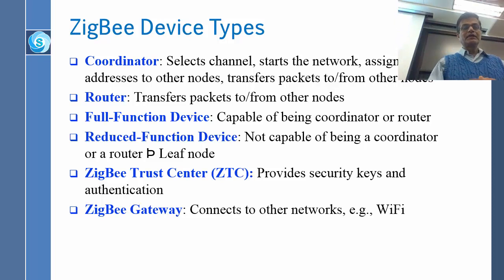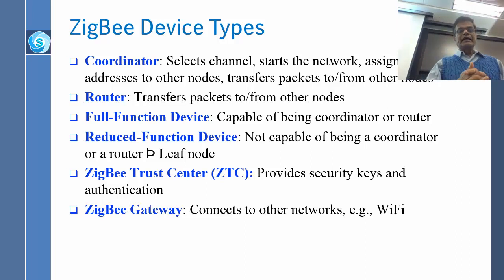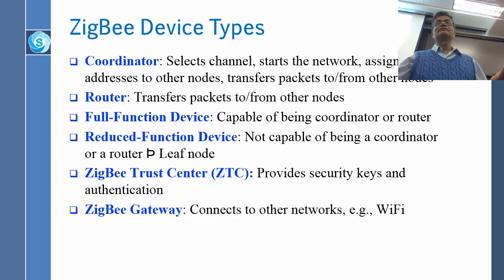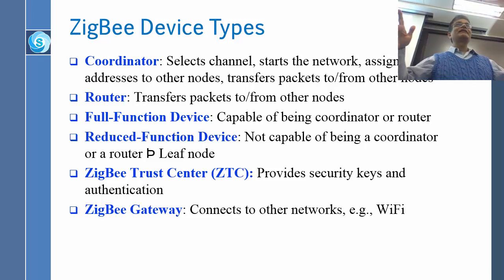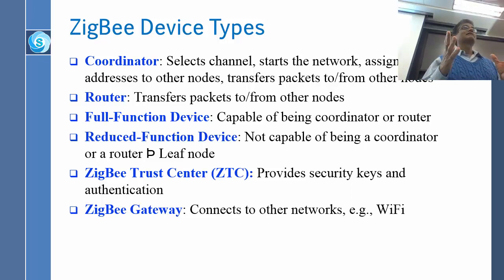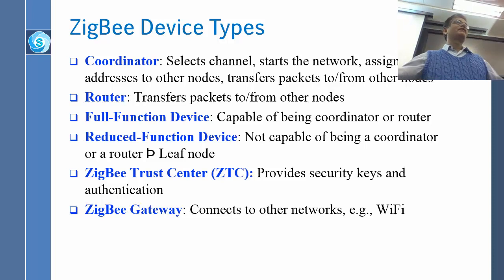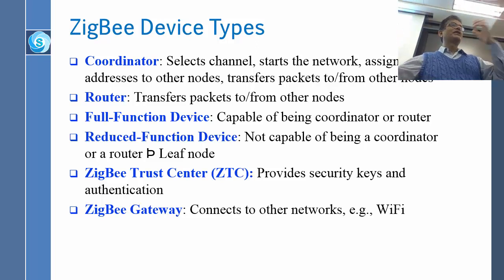To summarize device roles: the coordinator is a superset of routers. FFD can be a router, coordinator, or leaf node. RFD can only be a leaf node. The trust center is a security function totally independent of routing — it is like a safe where you keep all the keys, and it could be a separate computer in your home acting as the trust center.